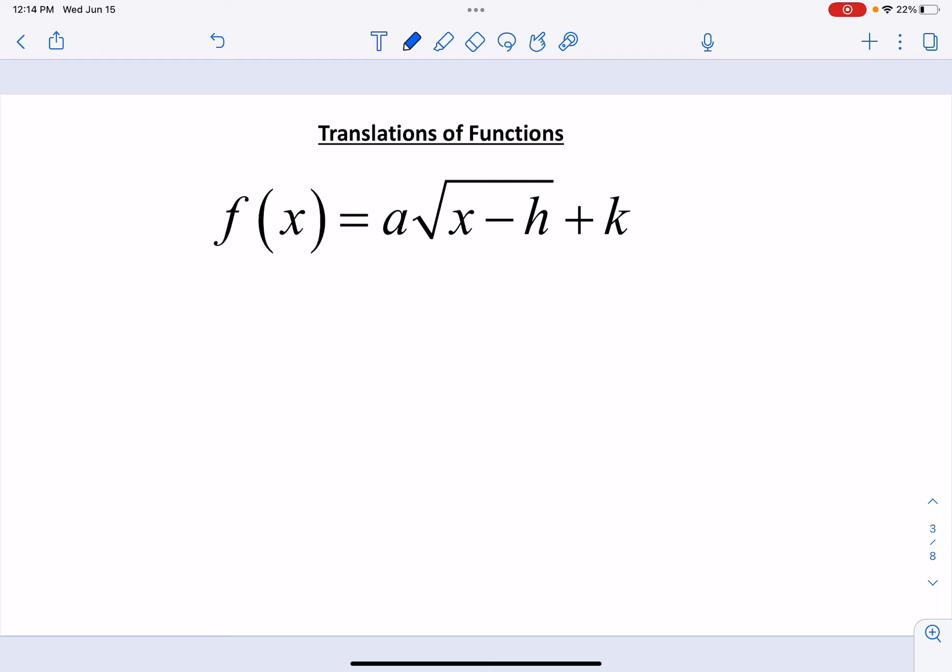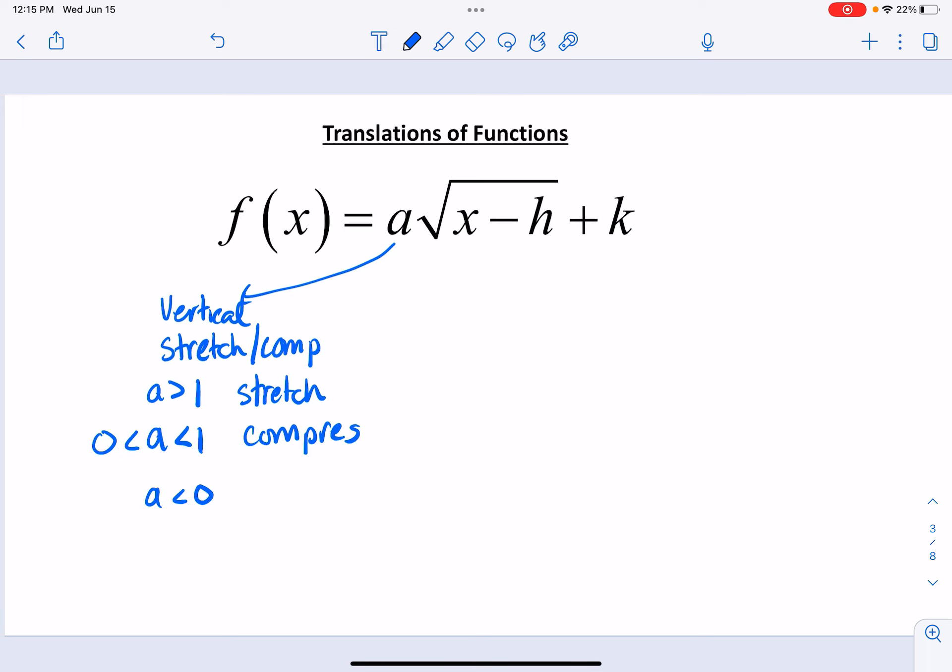So translations of functions. A is what we call a vertical stretch or compression. If A is greater than 1, we're stretching. If A is less than 1, it's compressing. I should say if it's between 0 and 1. If A is less than 0, then it is a reflection on the x-axis.